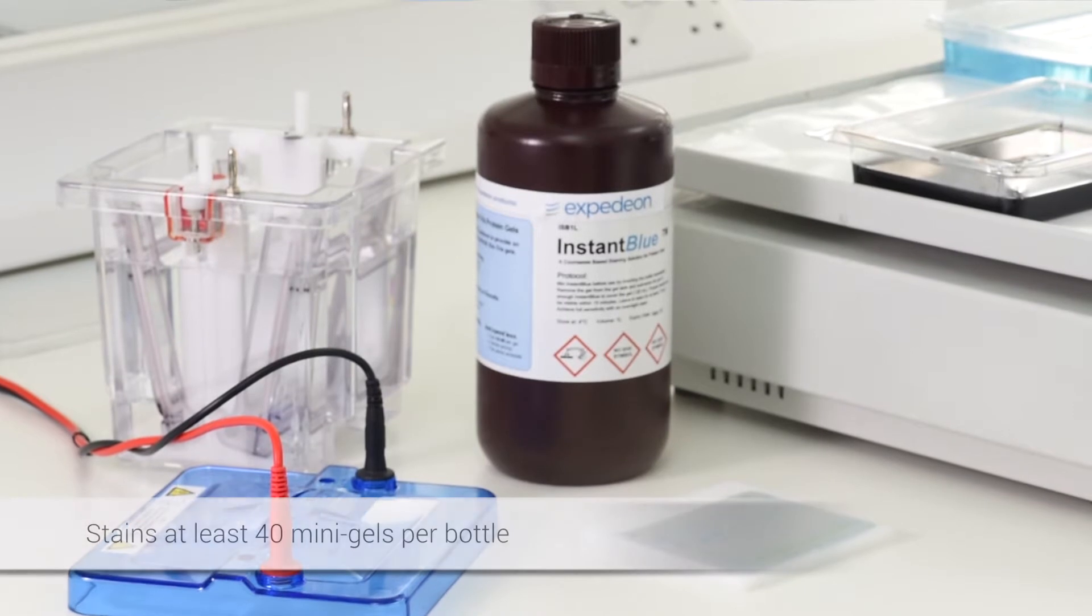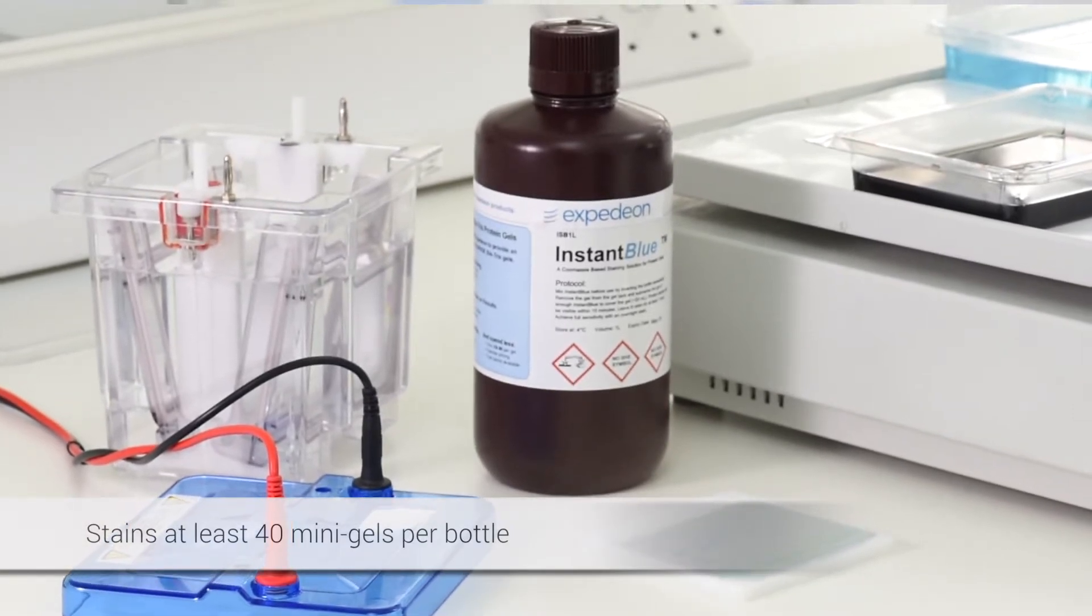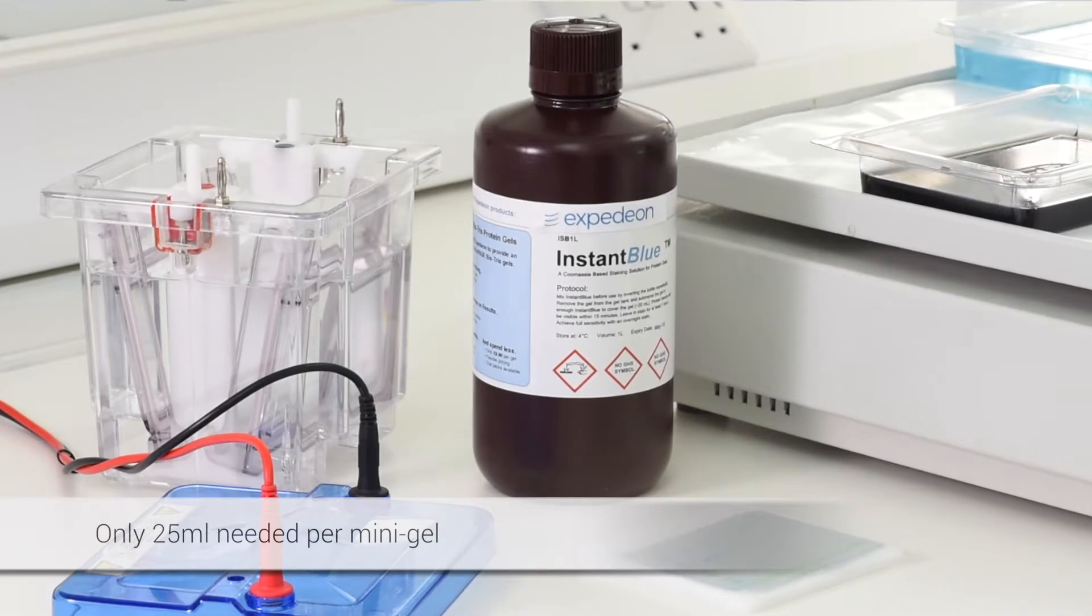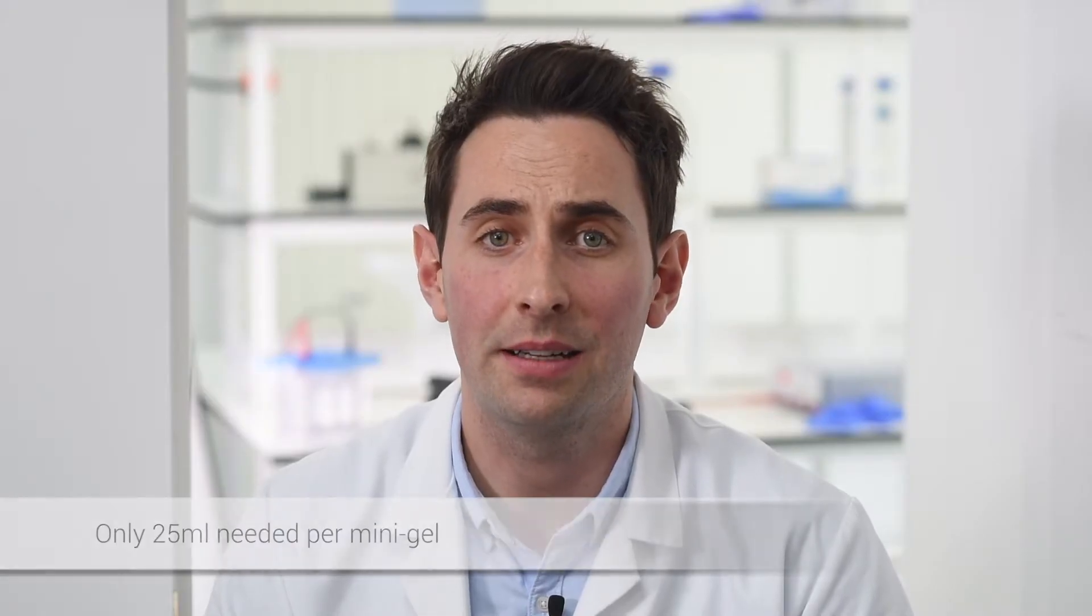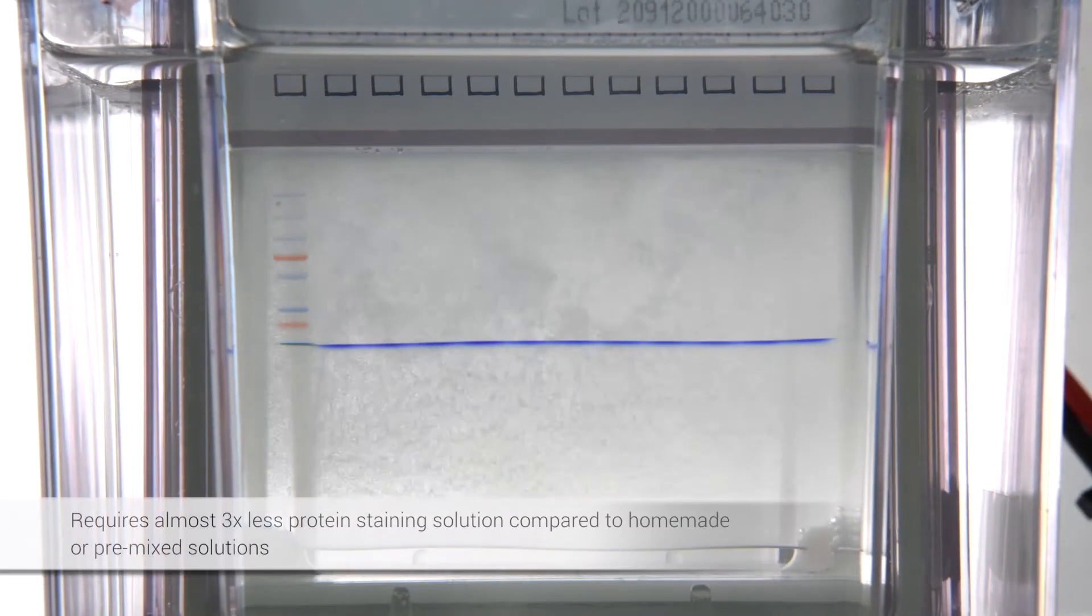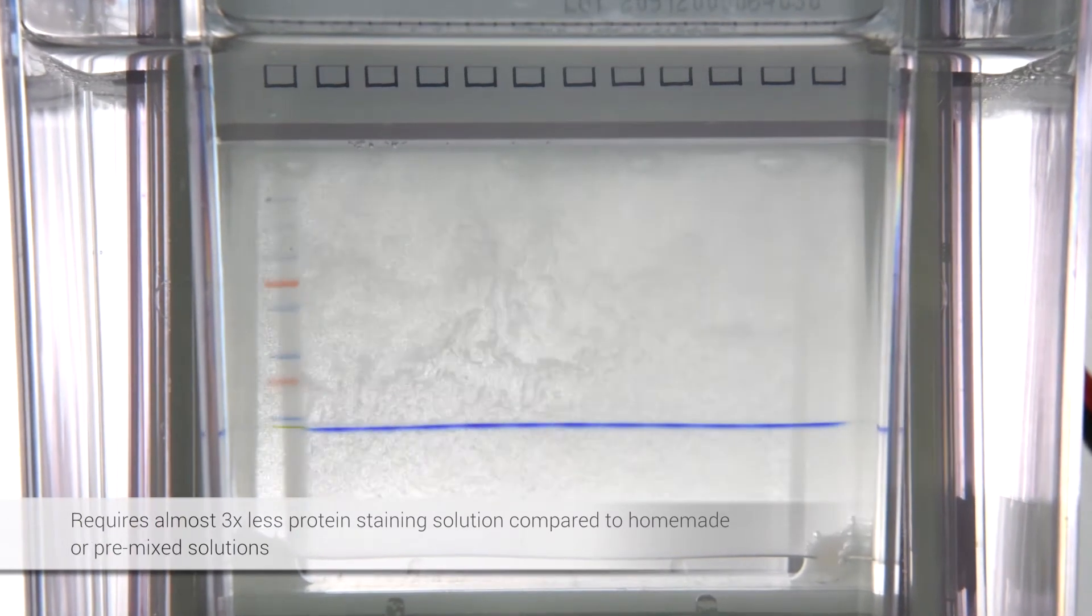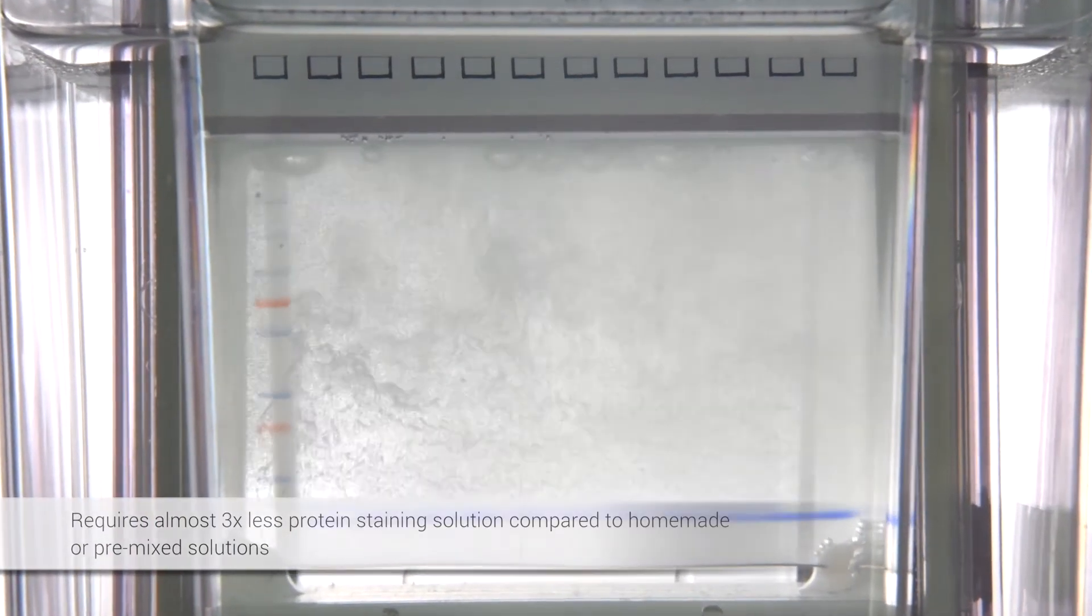InstantBlue is great value for money as it will stain at least 40 mini gels per bottle, giving you the ultimate staining power with only 25 milliliters per mini gel. This means you require almost 3 times less protein staining solution compared to homemade or pre-mixed solutions.